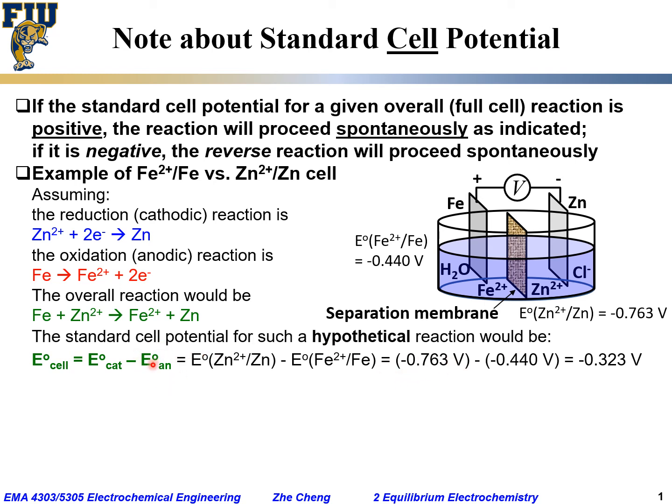The anodic half-cell reaction in this case would be for the iron, which is minus 0.440 volt. When you do the subtraction, the result would be a minus number, minus 0.323 volt.